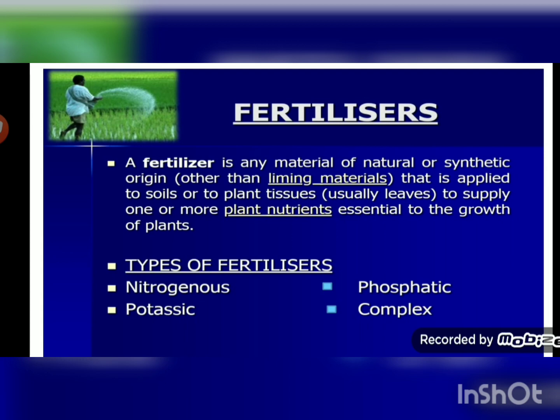Fertilizers are not natural or organic compounds but inorganic compounds — chemicals which are added to the soil to increase its fertility. Fertilizers are rich in nitrogen, phosphorus, potassium, and some minerals. Unlike manure, fertilizers are not made on the farm; they are manufactured in factories and are synthetic or inorganic matter.